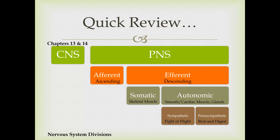In chapters 13 and 14 last semester, you covered the CNS—the brain and the spinal cord. In chapter 16, you looked at the autonomic division of the efferent peripheral nervous system, covering the sympathetic and parasympathetic divisions. That brings us to chapter 15, where we're going to look at the afferent division—sensory information going from the body up to the brain—and then the somatic division of the efferent system, which carries commands from the brain down to the skeletal muscles.